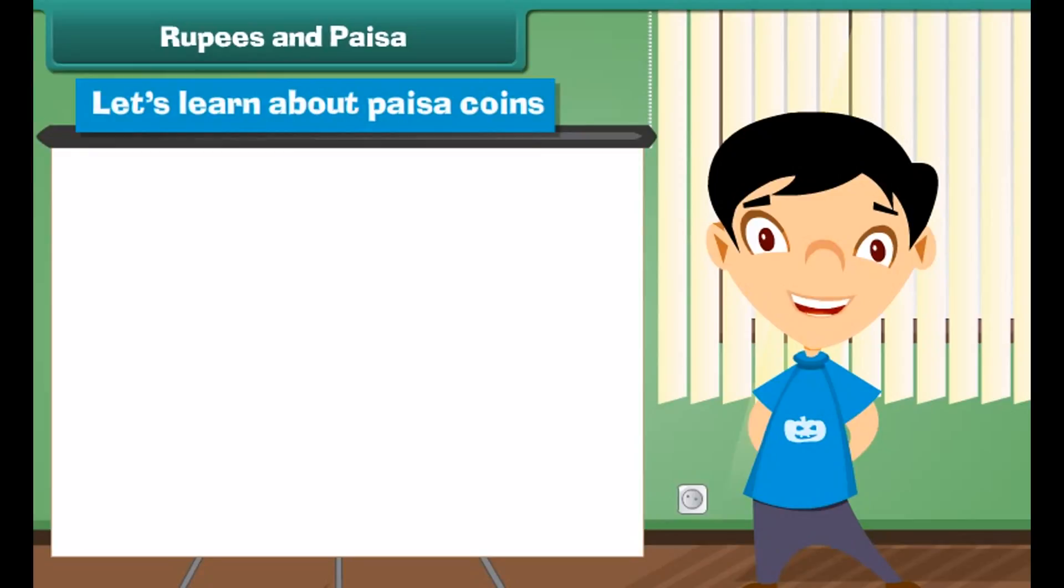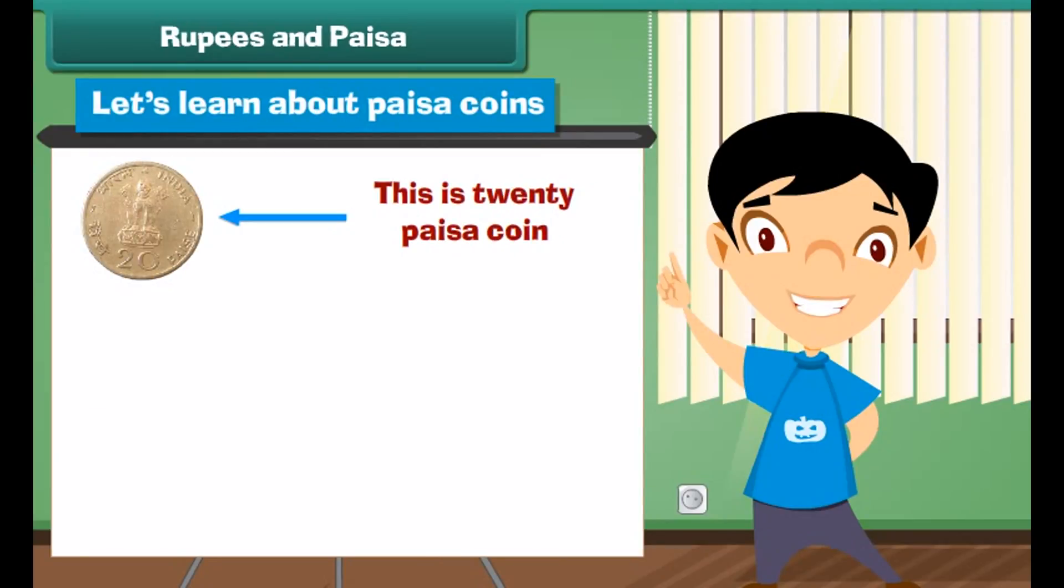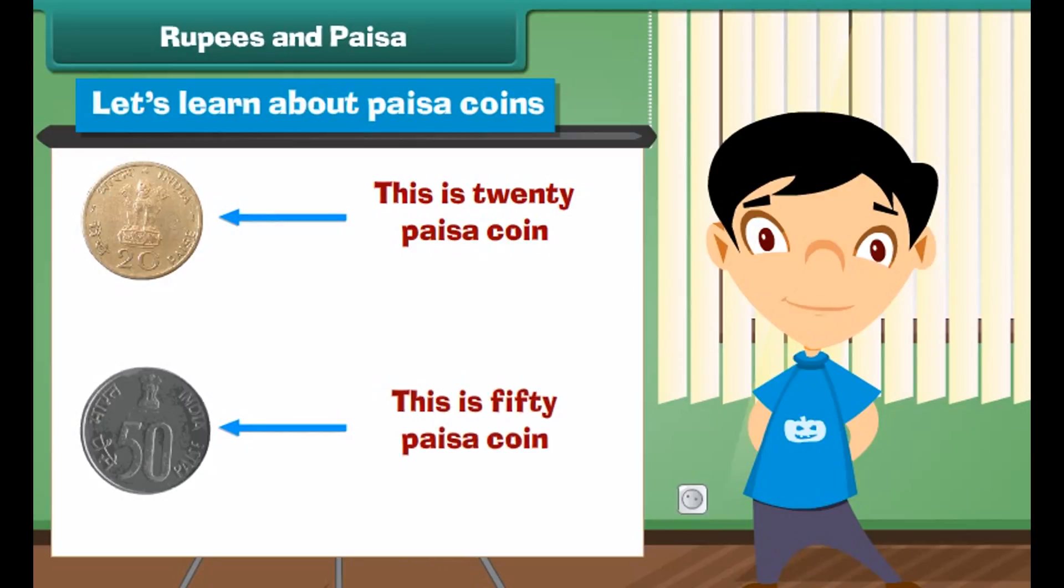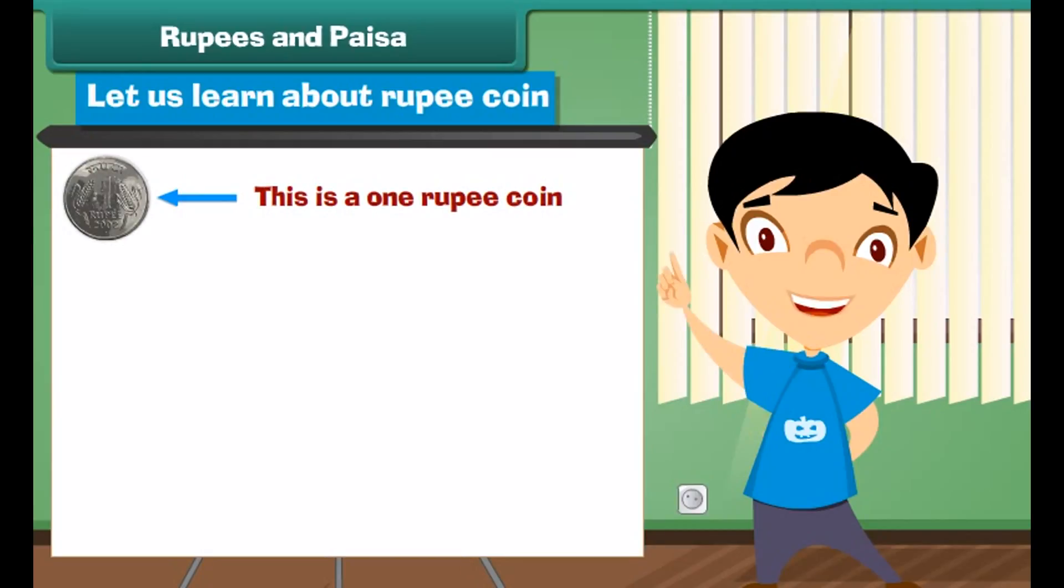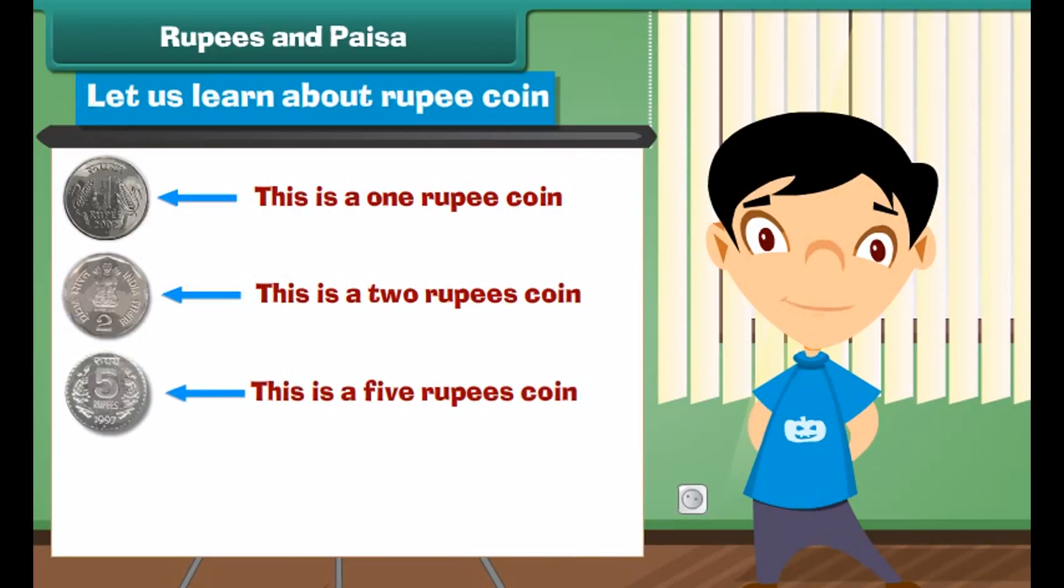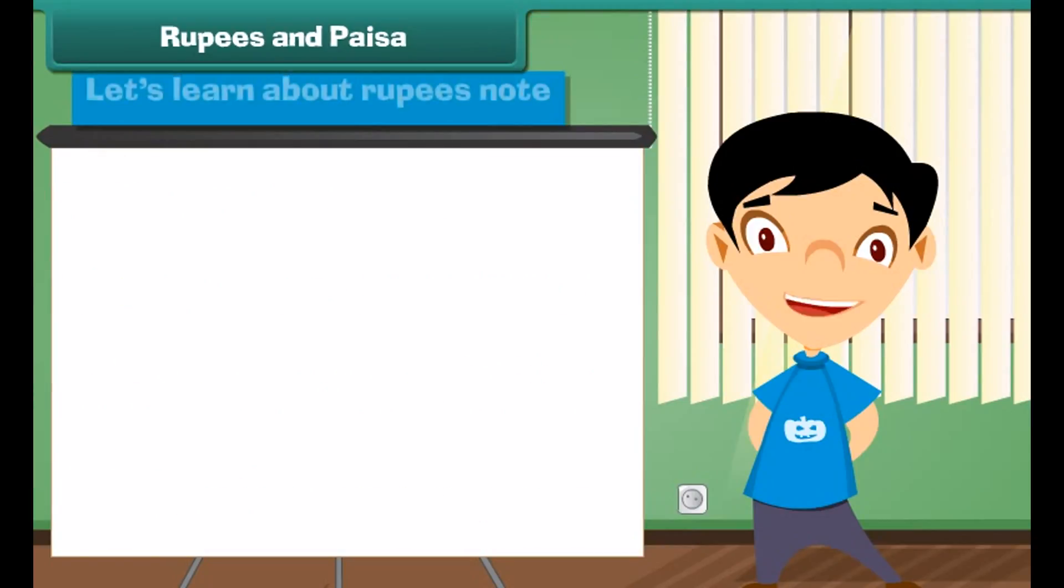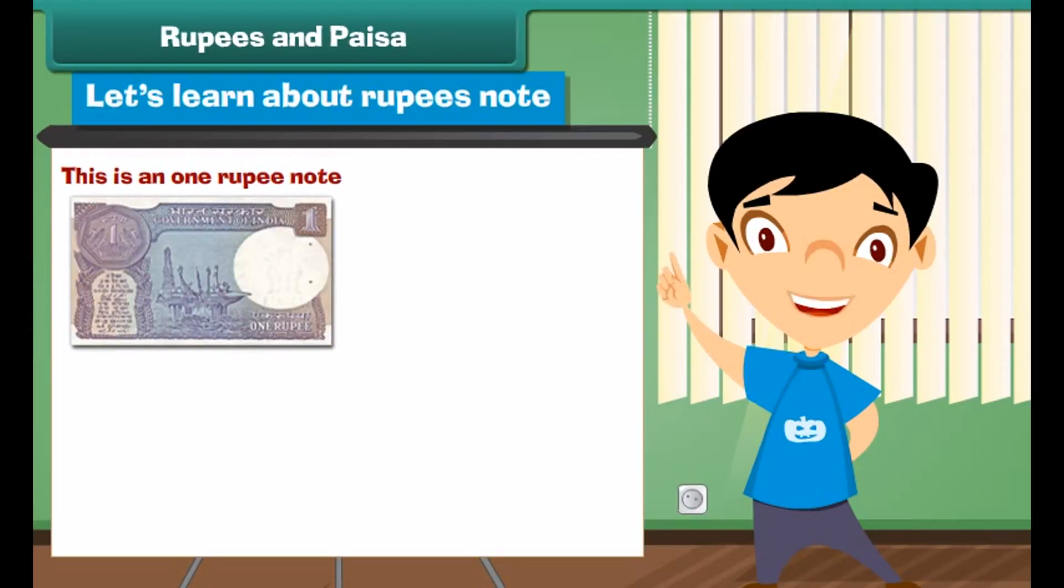Look at this Barbie doll. Price is written on its label. We read the price as 95 rupees and 50 paise. Let's learn about paise coins. This is 20 paise coin. This is 50 paise coin. Let us learn about rupee coins. This is a 1 rupee coin, 2 rupees coin, 5 rupees coin, and 10 rupees coin.